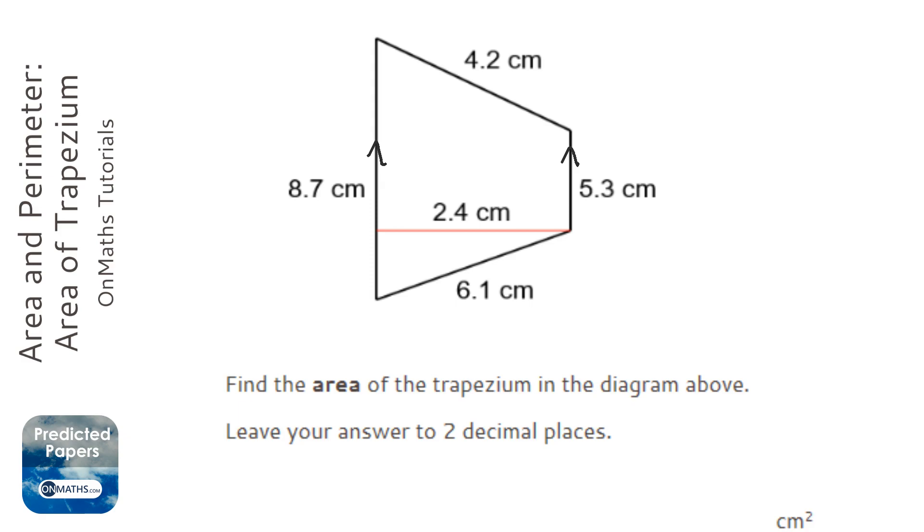Now the height is the thing that is hitting both of the bases, which are the parallel lines, at 90 degrees. So there's 90 degrees here, 90 degrees here. So this is our height.